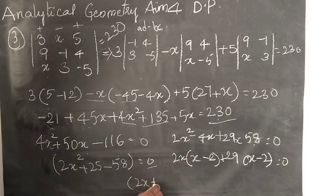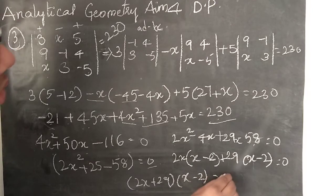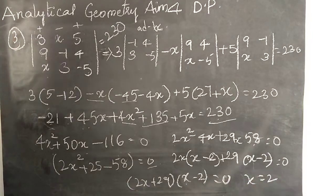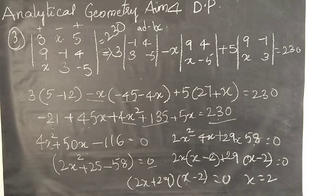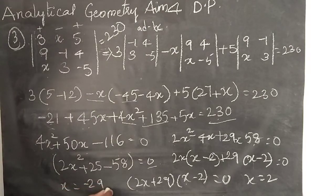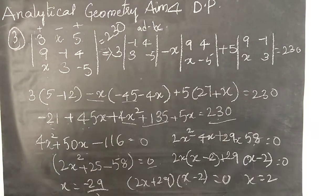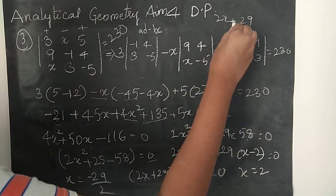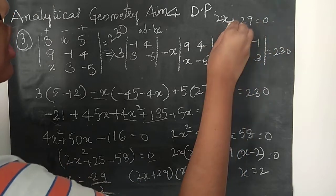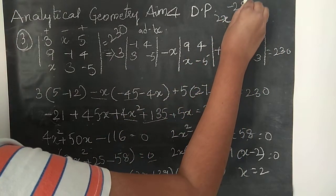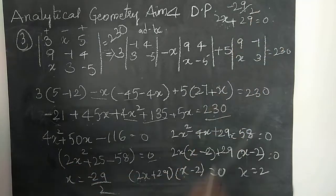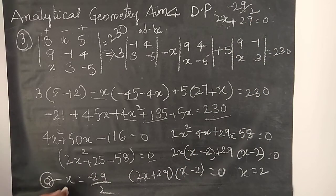So the two factors are: 2x plus 29 into x minus 2 equals 0. From x minus 2 equals 0, x equals 2. From 2x plus 29 equals 0, sending plus 29 to RHS: 2x equals minus 29, so x equals minus 29 by 2. This is option A.